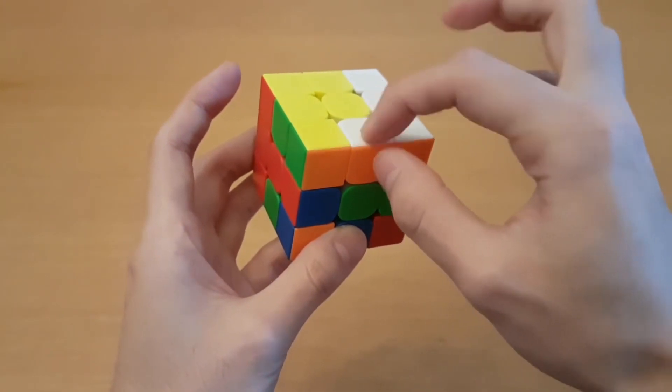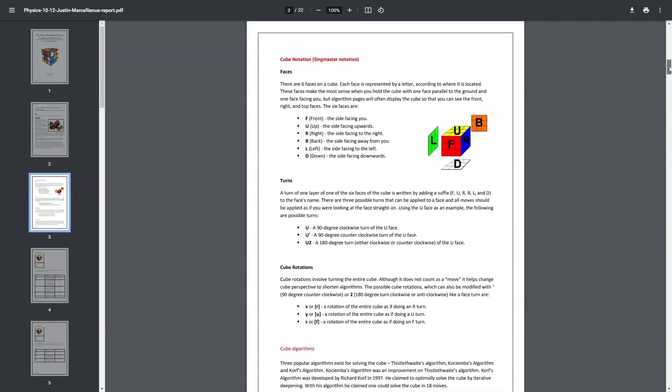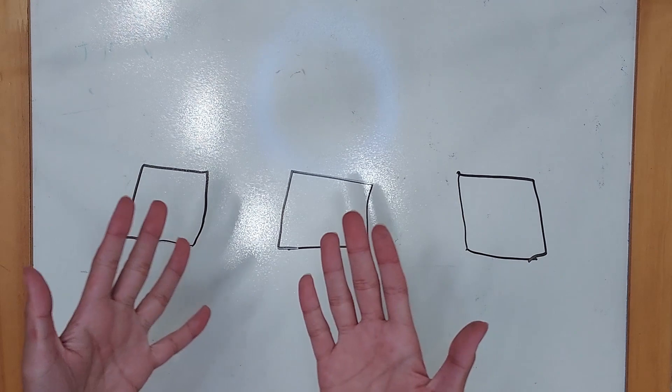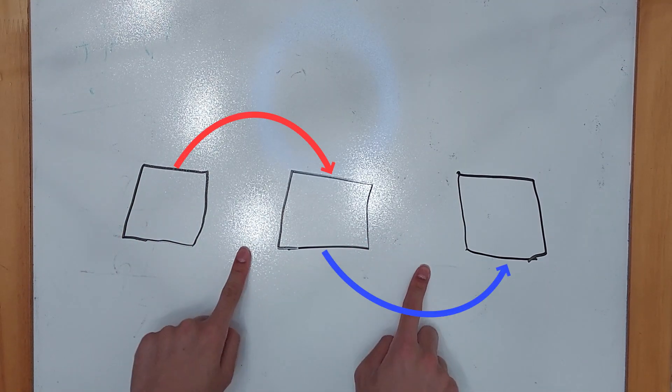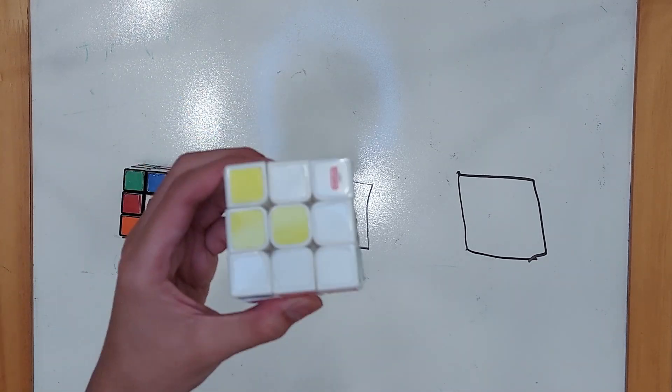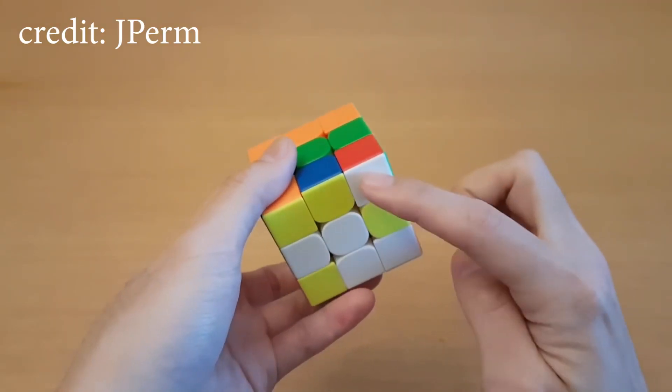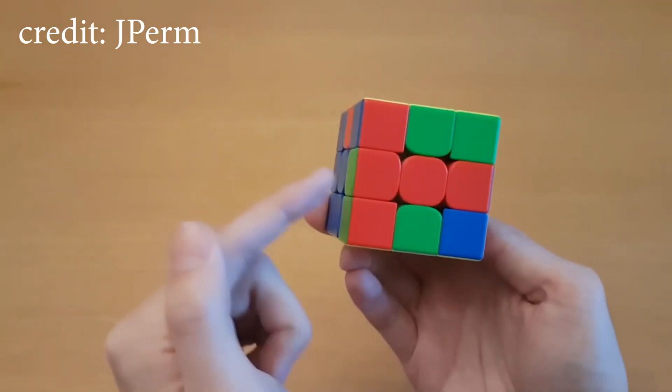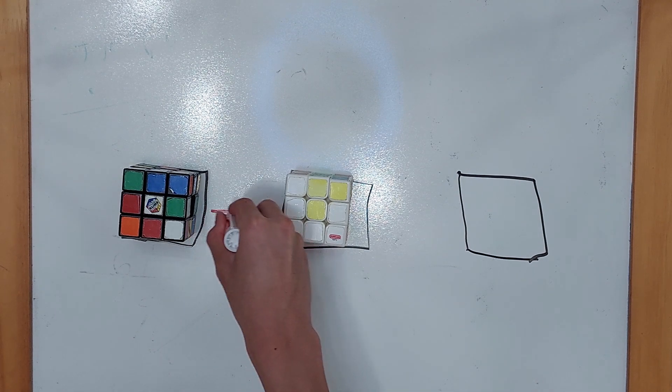But before I tell you this number, we need to know how this algorithm works. This algorithm is broken down into two steps. The first step is to take the scrambled cube and turn it into this cube. All the corners and edges have the same orientation, while the middle edges are in the middle. This is step number one of the Kociemba algorithm.